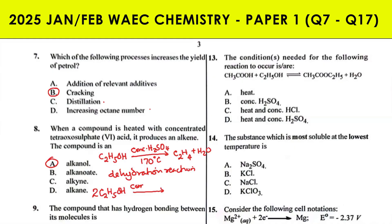With concentrated H₂SO₄ at about 80 degrees Celsius — a lower temperature — and with the alcohol in excess, you get C₂H₅OC₂H₅ plus water. This is also a dehydration reaction.